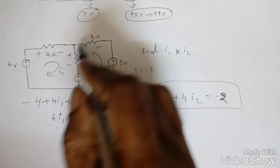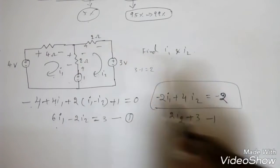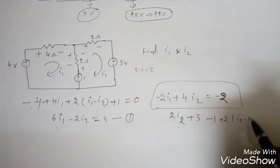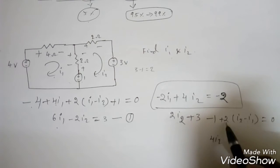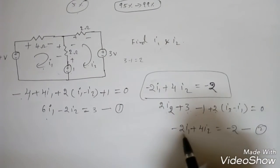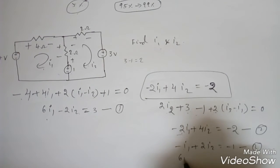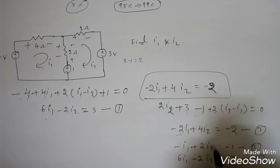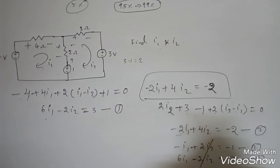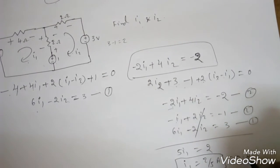Solving the two simultaneous equations: Equation 1 is 6i1 − 2i2 = 3, equation 2 is −i1 + 2i2 = −1. Adding them to eliminate i2: 5i1 = 2, so i1 = 2/5 = 0.4 ampere.